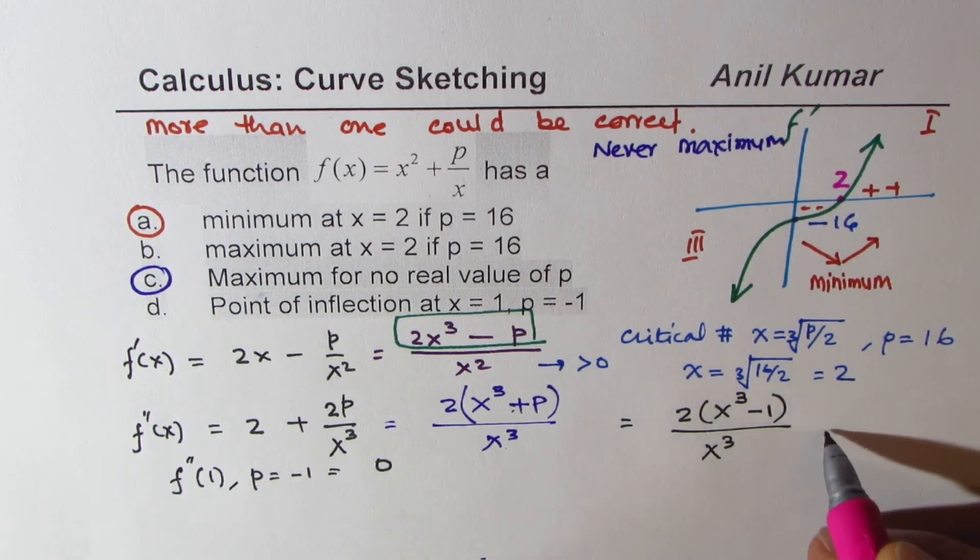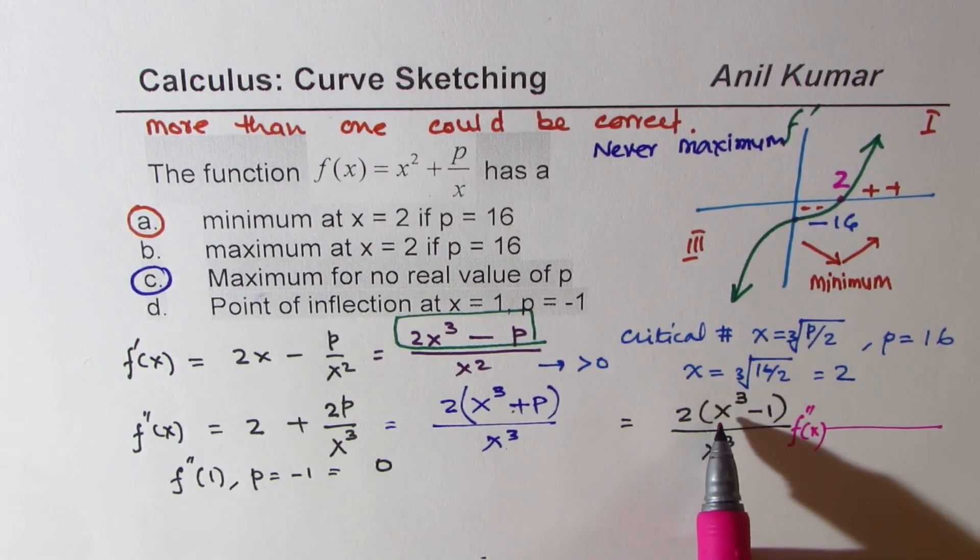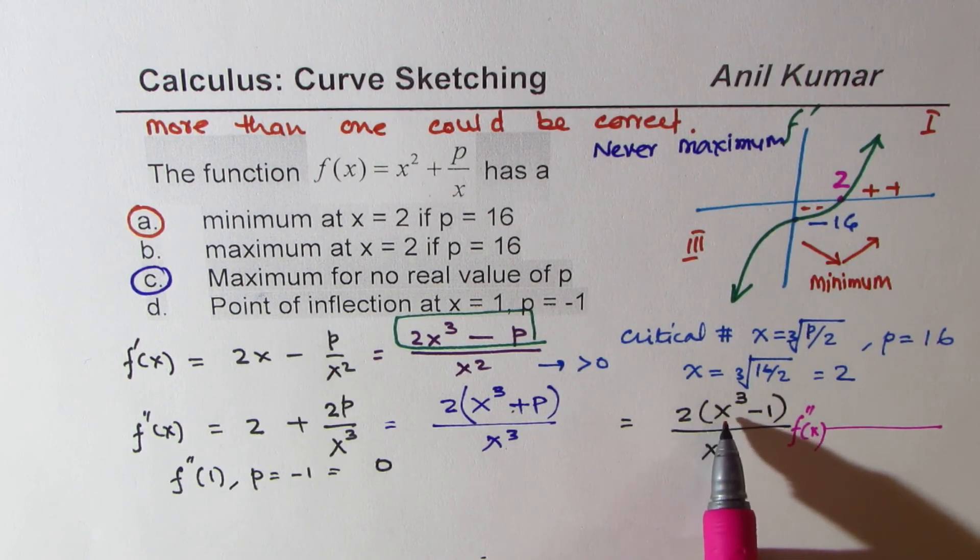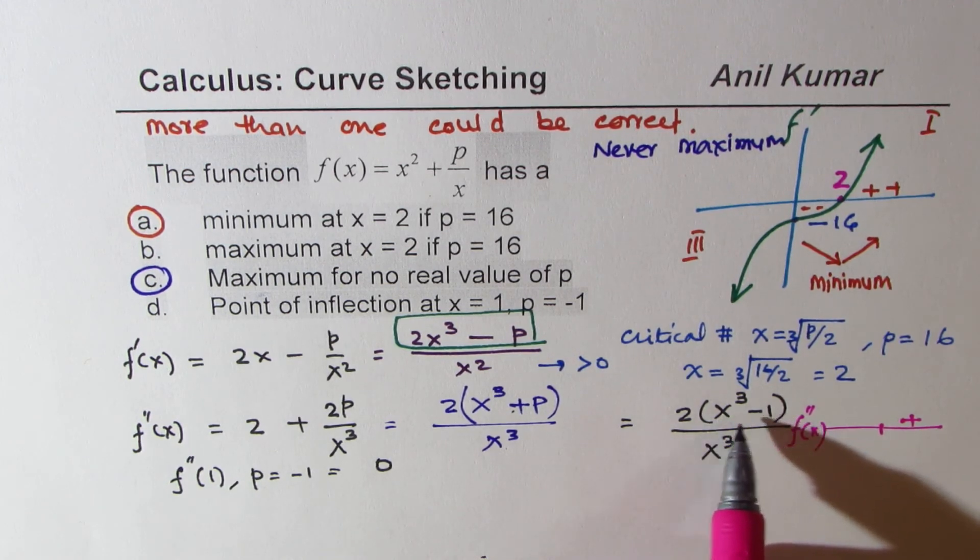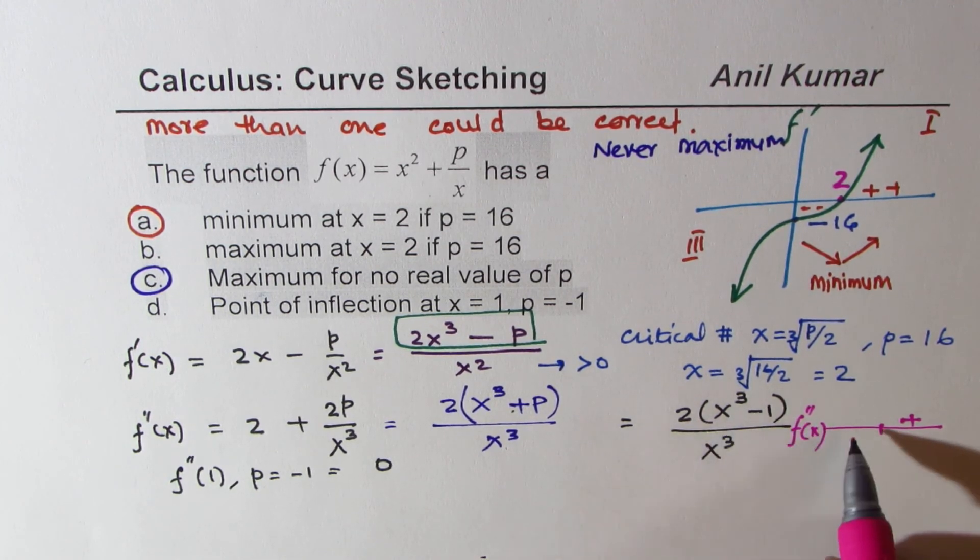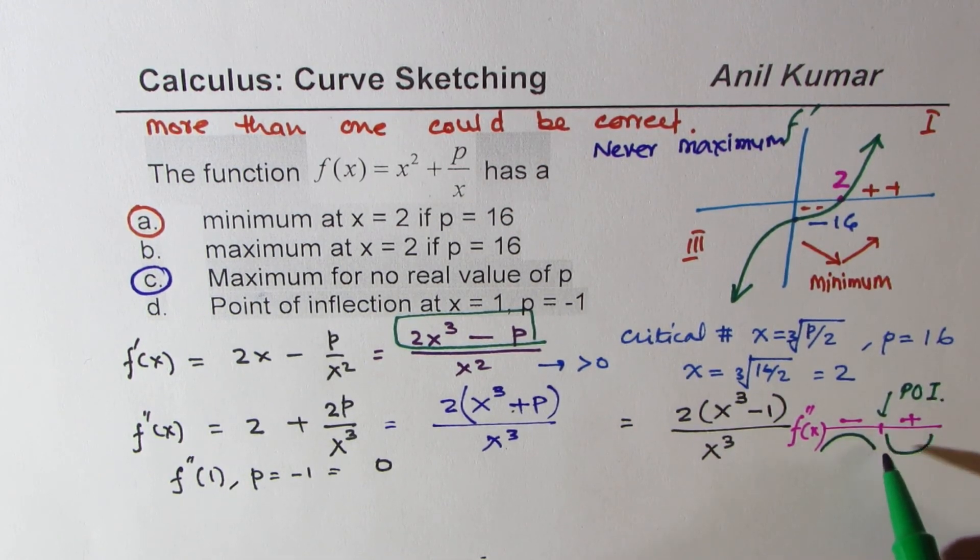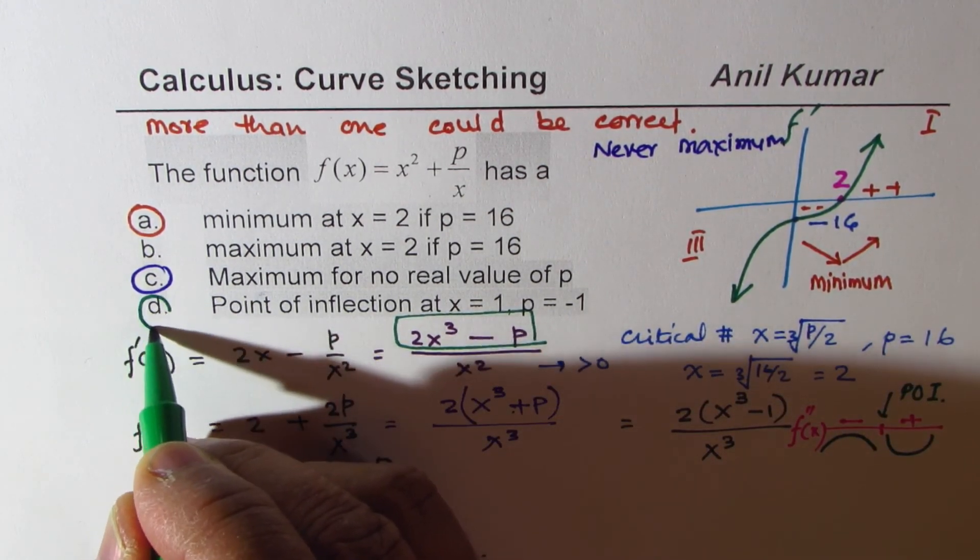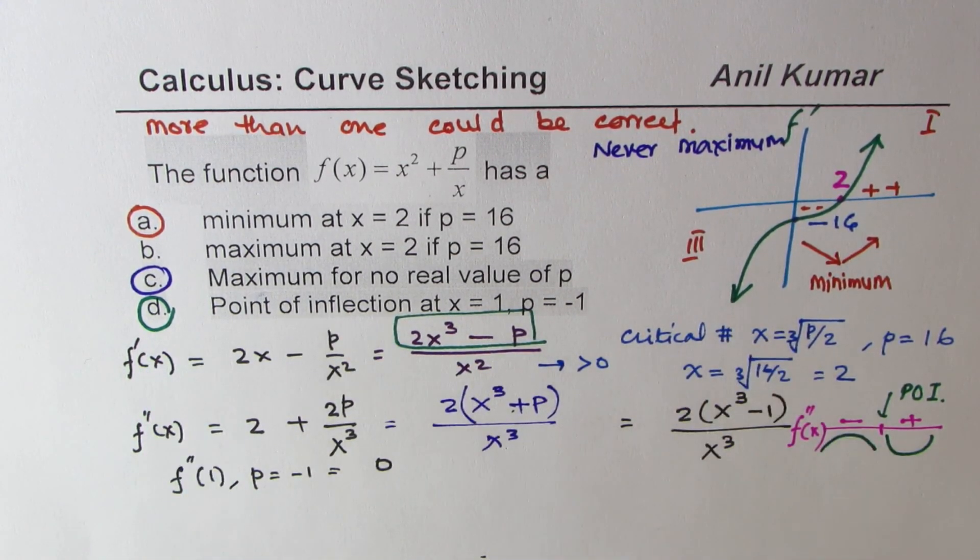Now, you could test on either side of this value. So when you test the second derivative, and if the x value is greater than 1, then we expect a positive value, right? And when x value is less than 1, in that case, we'll expect a negative value. So the concavity changes. Negative means concave down, and positive means concave up. So we do have a point of inflection at x equals to 1 in this scenario. So this is also a correct option. Is that clear?